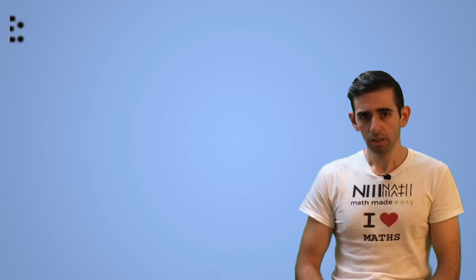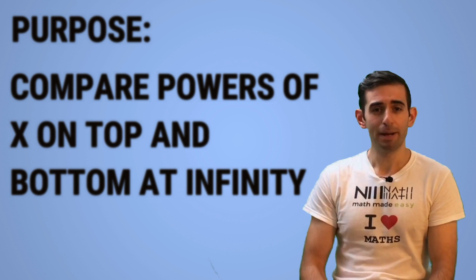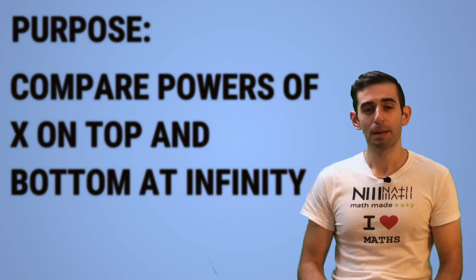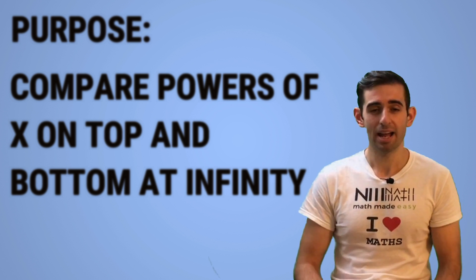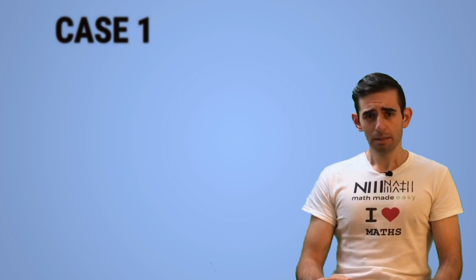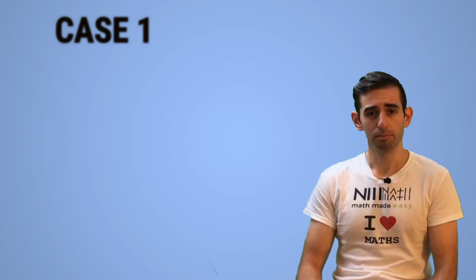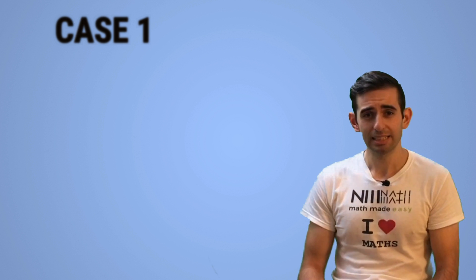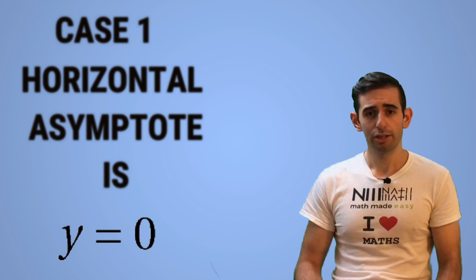The purpose when you take the limit as x goes to infinity is you're comparing the highest powers on top and bottom, as at infinity they will determine the behavior. So in case one, the power is smaller on top, so at infinity it'll have pretty much no effect compared to the bottom. That means the horizontal asymptote in case one is y equals zero. So if you notice the power on top is smaller than the power on the bottom, you can simply state the horizontal asymptote is y equals zero.